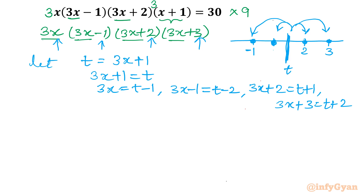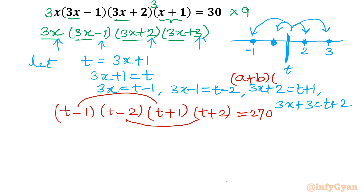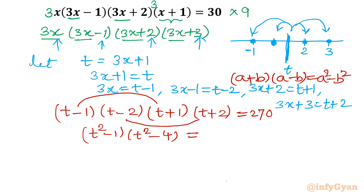So 3x is (t minus 1), 3x minus 1 is (t minus 2), 3x plus 2 is (t plus 1), and 3x plus 3 is (t plus 2). The right-hand side is 270. I will consider these two terms together and these two terms together, because I can see (a plus b)(a minus b) which can be written as a² minus b². So it gives us (t² minus 1) from the first and third brackets, and (t² minus 4) from the second and last brackets, equal to 270.